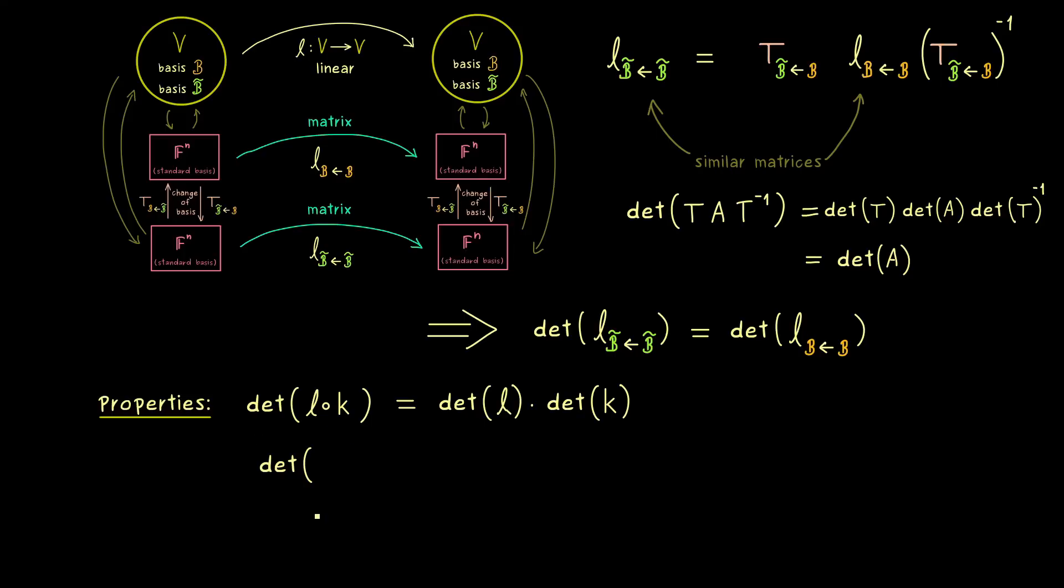And at this point you might think of a very special linear map we can have from V to V. Namely, we can choose the identity map. And since this one is always represented by the identity matrix, we get one for the determinant. So this is important to remember, the determinant function even in this general case is fixed with that special value.